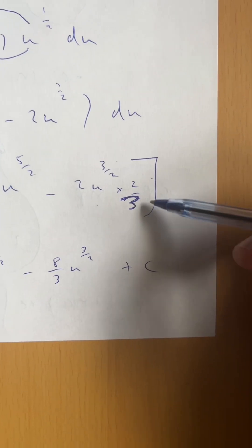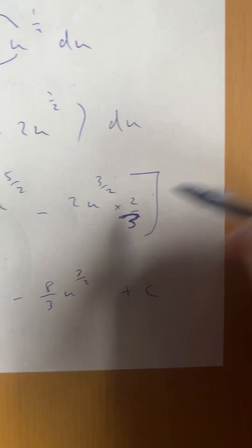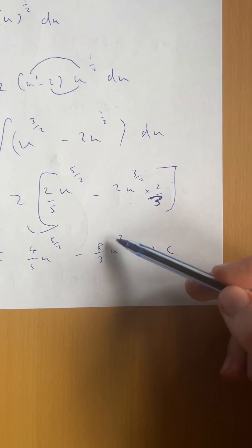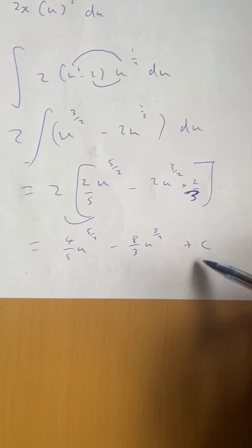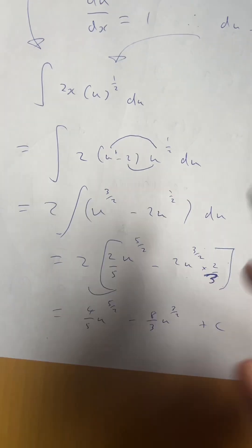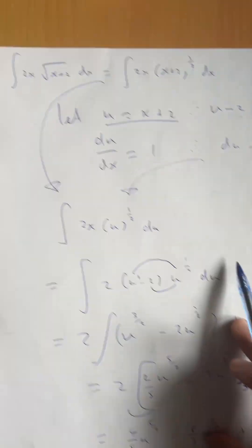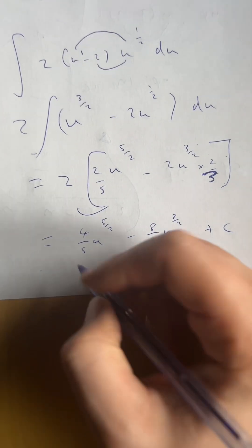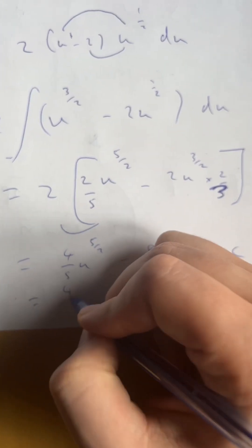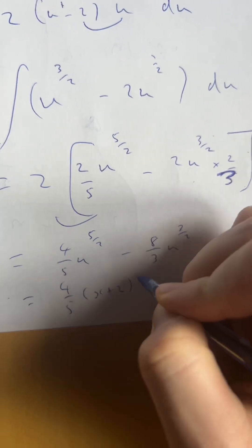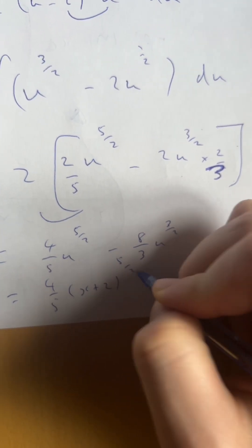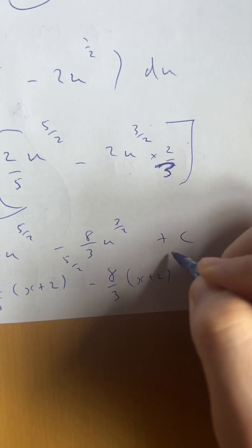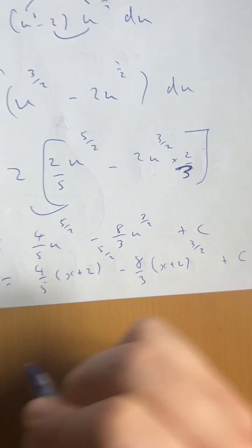Sorry — two over three, not two over five. So dividing by three over two is multiplying by two over three. Expanding the brackets, we get four over five and eight over three. So we get something like that, plus c — though in the real question there were limits, which I'll come back to. Now we plug the substitution x plus two back in for u, giving our final answer: four over five times (x plus two) to the power of five over two, minus eight over three times (x plus two) to the power of three over two, plus c.